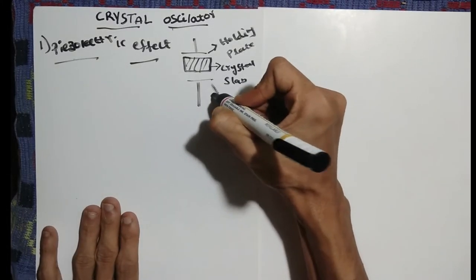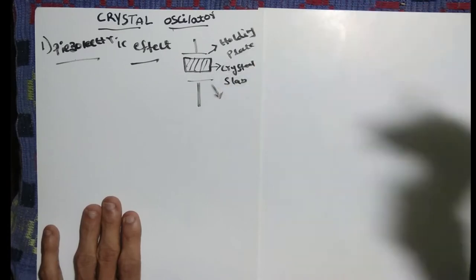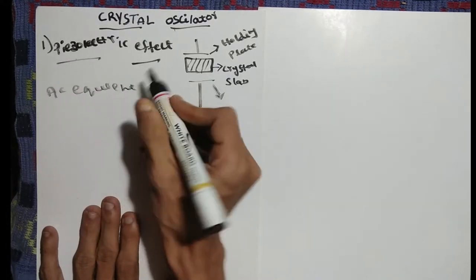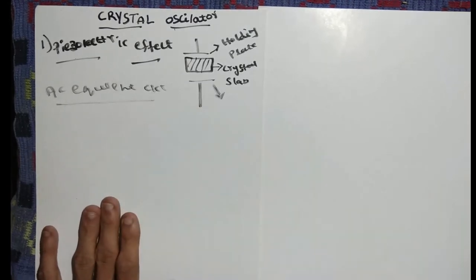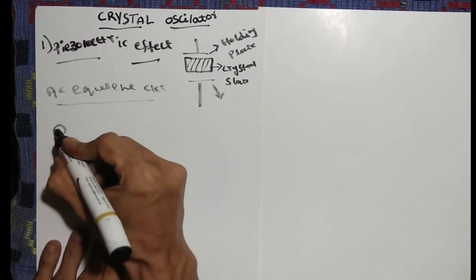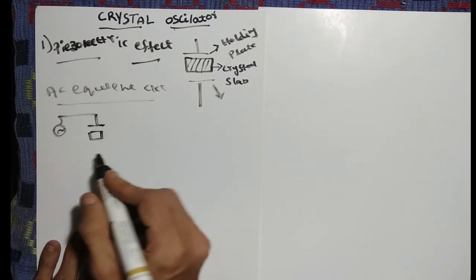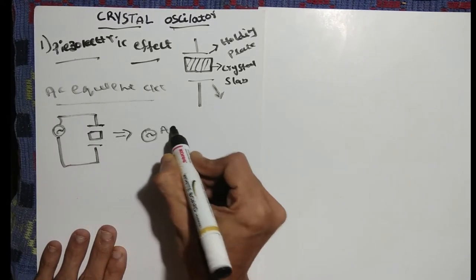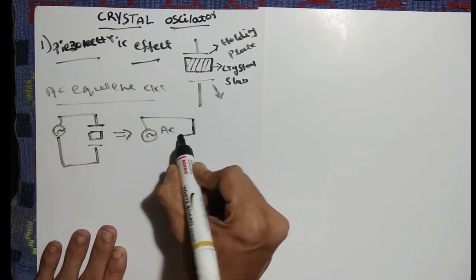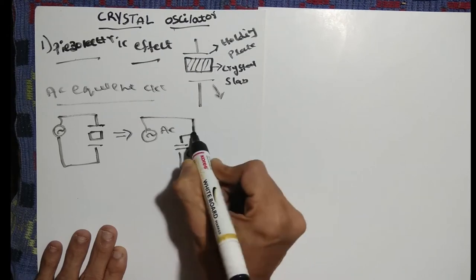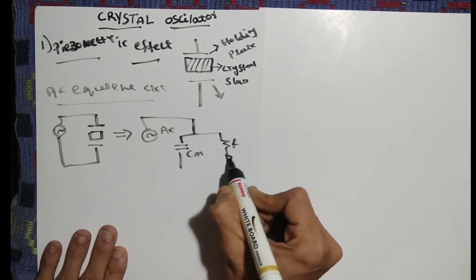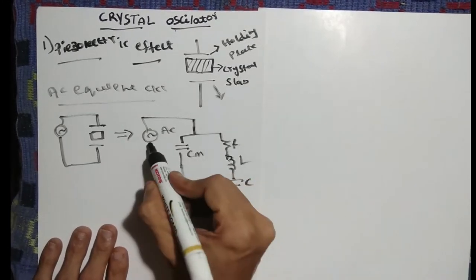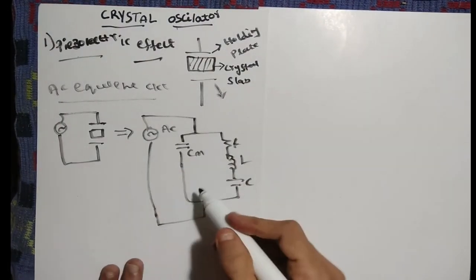Every crystal has its own different frequency depending upon its cut. We can take one particular frequency to make it oscillate. Next we discuss the AC equivalent circuit of the crystal — what it looks like inside. When we give an AC signal, the crystal can be represented as a circuit with Cm in parallel with a series RLC circuit.